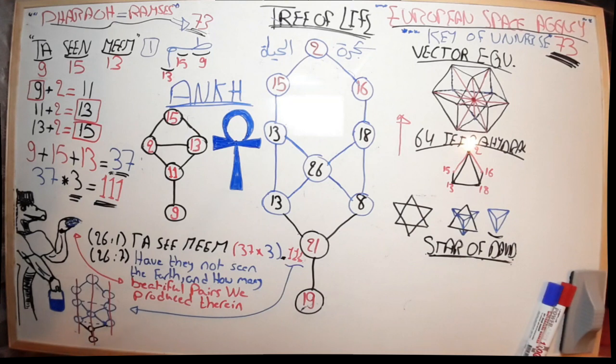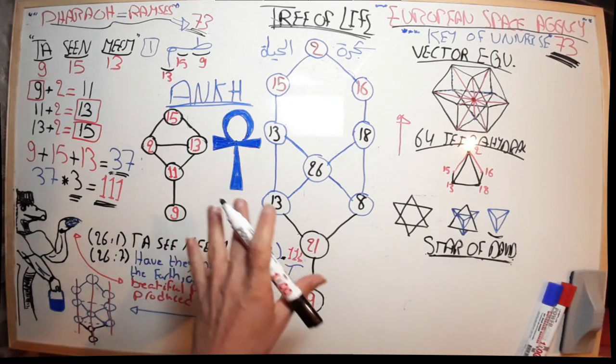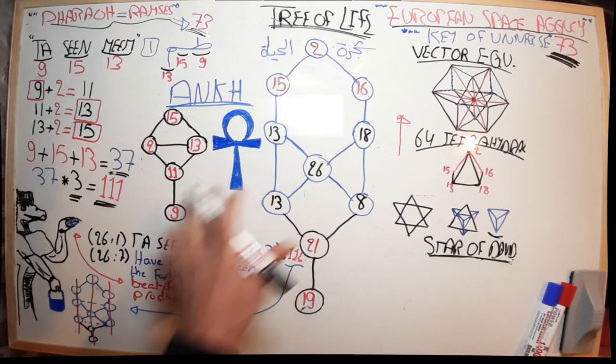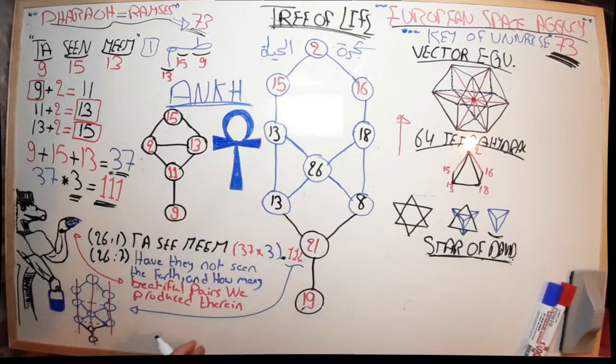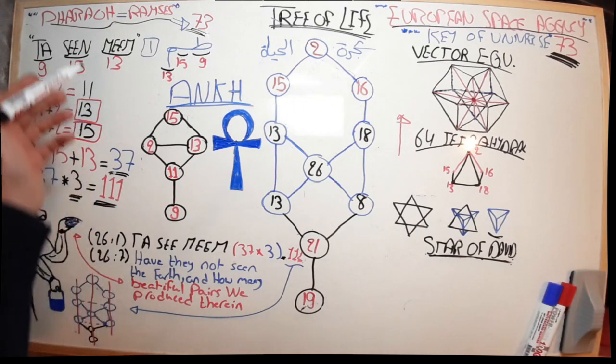One thing the historians got correctly is that those two things—the Ankh and the bucket—do have things in common, and we will prove it by numbers.